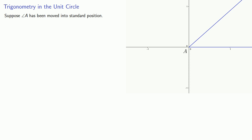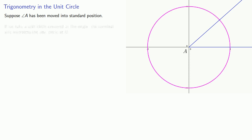Now let's consider a unit circle centered at the origin — that's a circle with radius 1 centered at the origin. The terminal side of the angle will intersect the unit circle at some point B. And since we're on a set of coordinate axes, we can say that this point B has coordinates x, y.